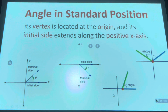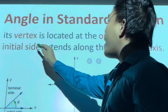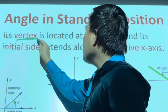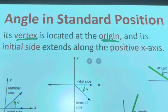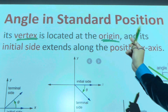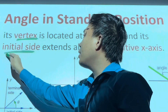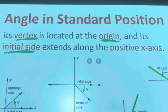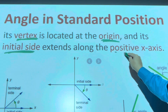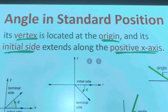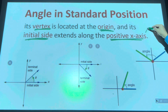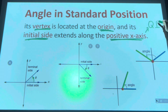When can we say that an angle is in standard position? The criteria is that the vertex must be at the point of origin. We're using the Cartesian plane here. The initial side should be found on the positive x-axis — that means the initial side is found in quadrant one.